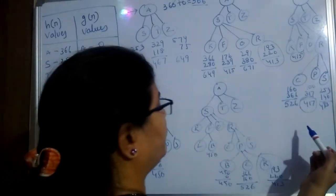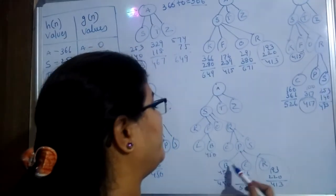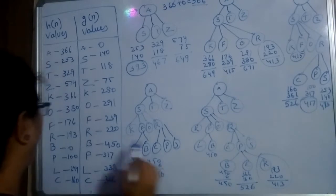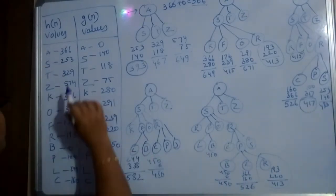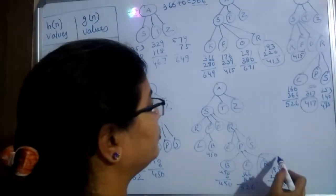Now I am coming to the next one, that is P, 417. I have expanded. I got B, C, R. So what is B, C, R? B, 0, 450. And C is 160, 366. And R is 193, 220. I got R again, that is 413.